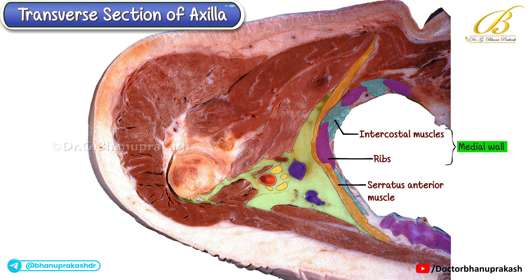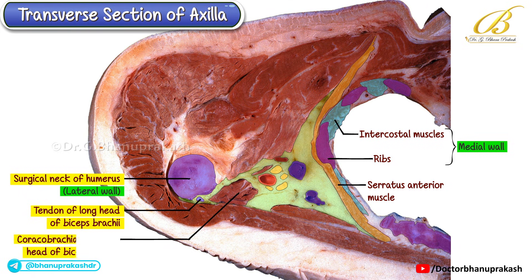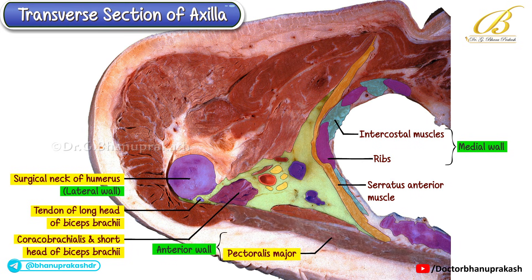Moving to the lateral aspect, the lateral wall appears narrow and is formed by the surgical neck of the humerus. The anterior surface of the humerus is identified by the bicipital groove, which contains the tendon of the long head of the biceps brachii. Just medial to the shaft of the humerus, you can see the cut sections of the coracobrachialis and the short head of biceps brachii lying close together. The anterior wall of the axilla is mainly formed by two muscles: the pectoralis major, which forms the bulk of the anterior wall, and the pectoralis minor, which is smaller and lies deep to the pectoralis major.